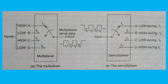Multiplexing means sharing. It is the process of switching information from several lines onto a single line in a specified sequence. A multiplexer or data selector is a logic circuit that accepts several data inputs and allows only one of them to get through to the output. It is an N-to-1 device. In the multiplexer shown in fig. a, if the switch connects to inputs A, B, C, and D for times T1 through T4 respectively, the output is as shown. This illustrates a 4-to-1 multiplexer.